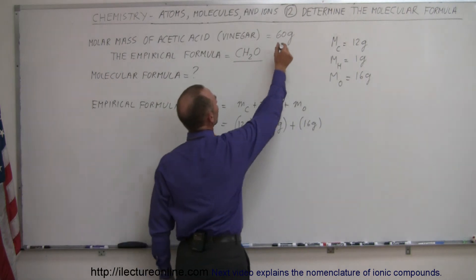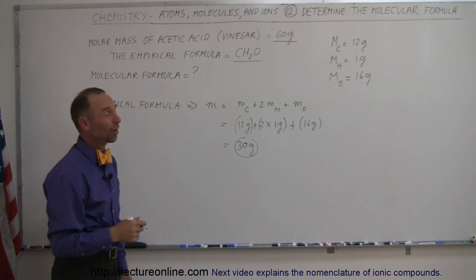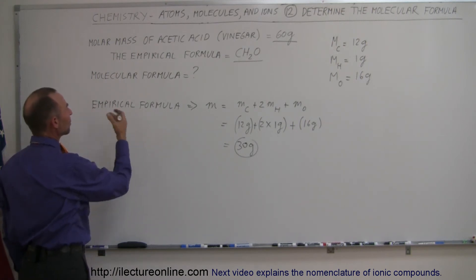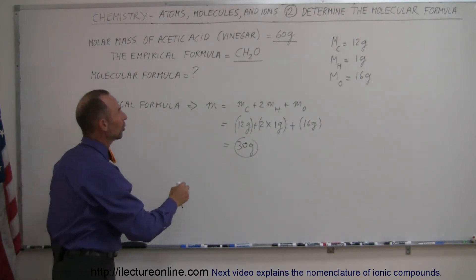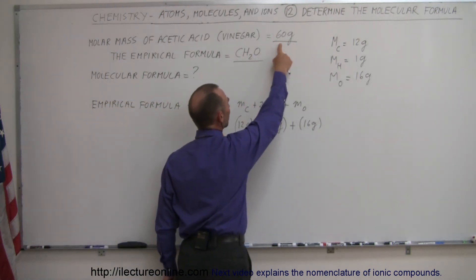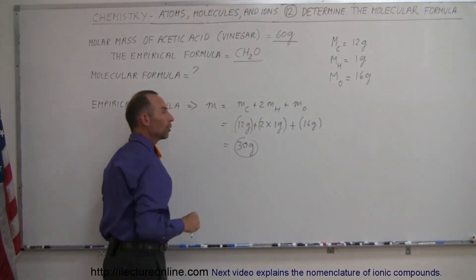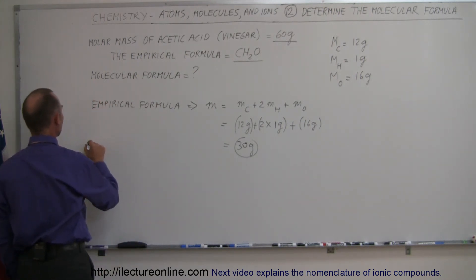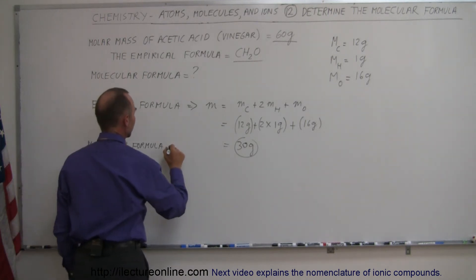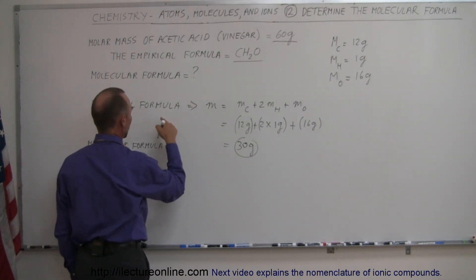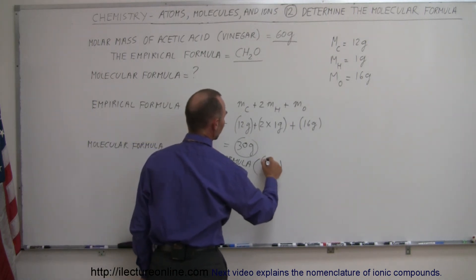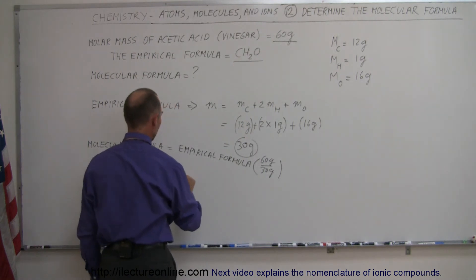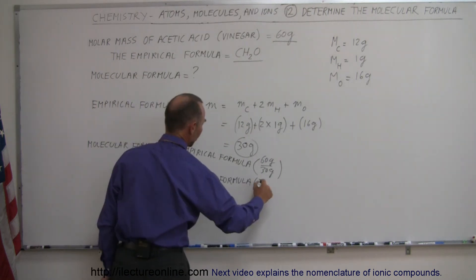But since in our sample we end up with 60 grams per mole, which is twice as much, we then realize that the molecular formula versus the empirical formula has a two-to-one ratio. With the molecular formula we get 60 grams per mole; with the empirical formula we get 30 grams per mole, so you can see the two-to-one ratio. To find the molecular formula, we take the empirical formula and multiply it by the ratio of 60 grams over 30 grams, which equals the empirical formula times the ratio of two to one.